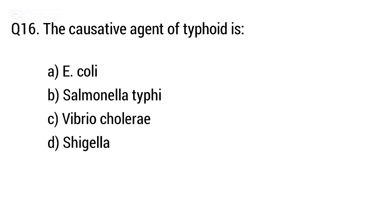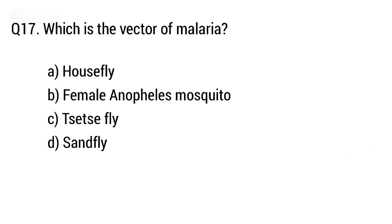Question 16: The causative agent of typhoid. The right answer is Option A/B, Salmonella typhi.